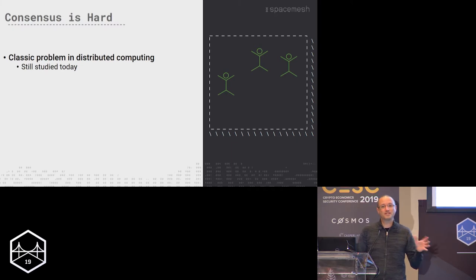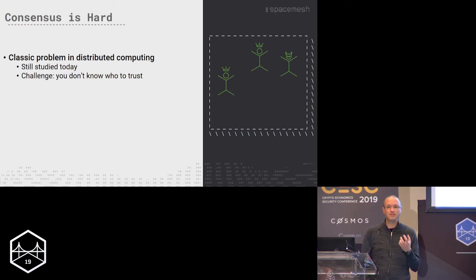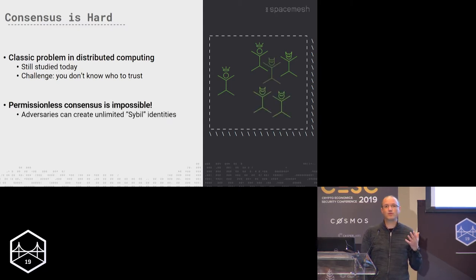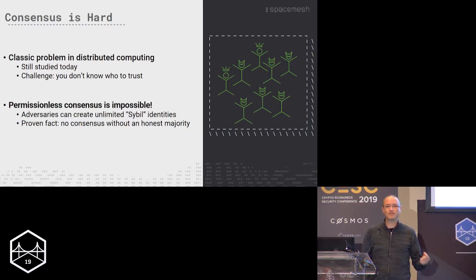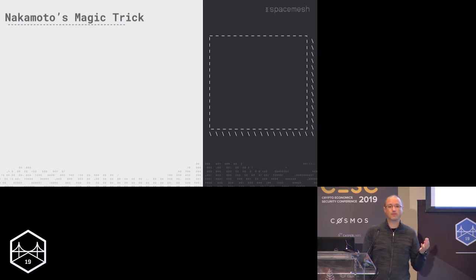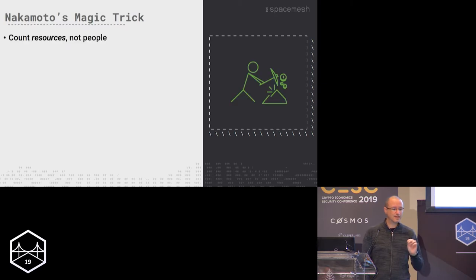The motivation is actually consensus, and we know that consensus is hard. It's a problem that's been studied a long time. The main challenge is that you don't know who to trust — some people may be malicious and you don't know who they are. We know that permissionless consensus is impossible without an honest majority. So the major new thing Nakamoto started with Bitcoin was a switch: instead of counting people to get consensus, let's try to count resources.